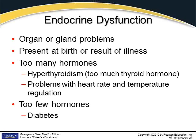Too few hormones — diabetes is our biggest example, when there's not enough insulin to do the job. But there are others: Graves' disease, Cushing's disease, and acromegaly. Giantism comes from too many hormones before growth stops, making people grow taller and taller. Acromegaly is the same process but occurs after they've stopped growing, so people get heavier with thicker features rather than getting taller.